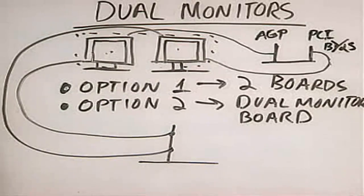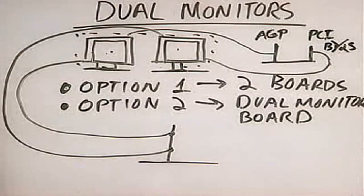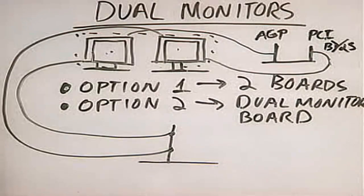Once you have your boards configured and your monitors hooked up, you need to go into your operating system and configure it to use both monitors. Windows 98 Second Edition, Windows 2000, Windows XP — all support dual monitors. Linux also supports dual monitors.